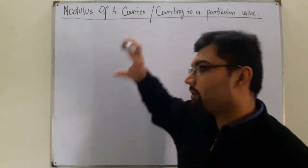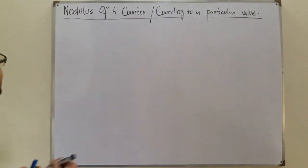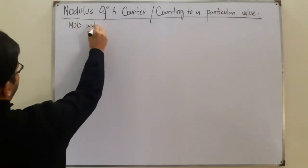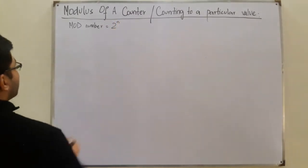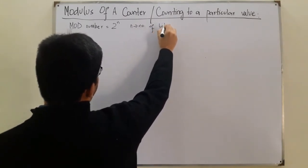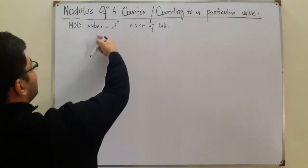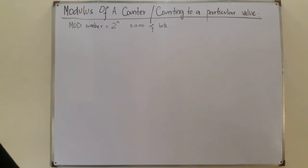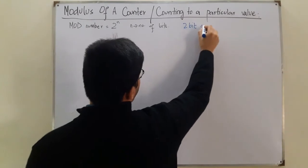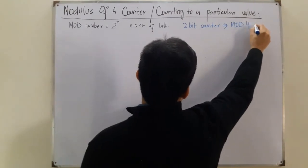That is what we understand today through this modulus. We represent the modulus by the mod number, which is equal to two to the power n, where n represents the number of bits. This means a two-bit counter has a mod number of four — a two-bit counter is also called a mod-four counter.